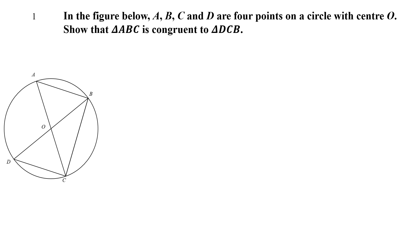Let's look at question 1. You're given a circle with center O and four points A, B, C, D on the circumference of the circle. We have to show that triangle ABC is congruent to triangle DCB. We need to show that the yellow colored triangle is congruent to the green colored triangle.